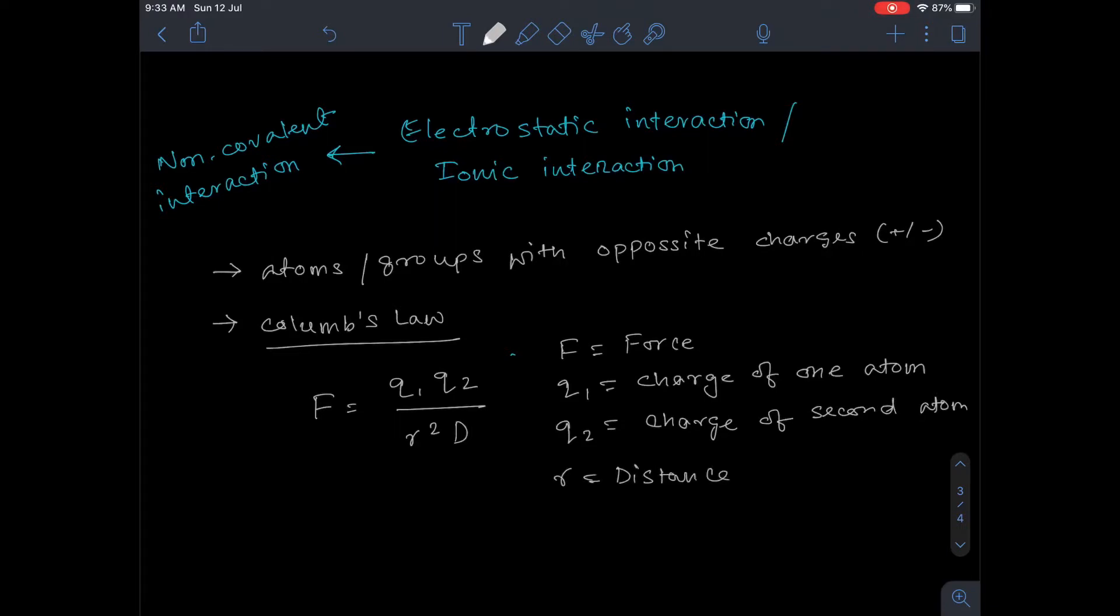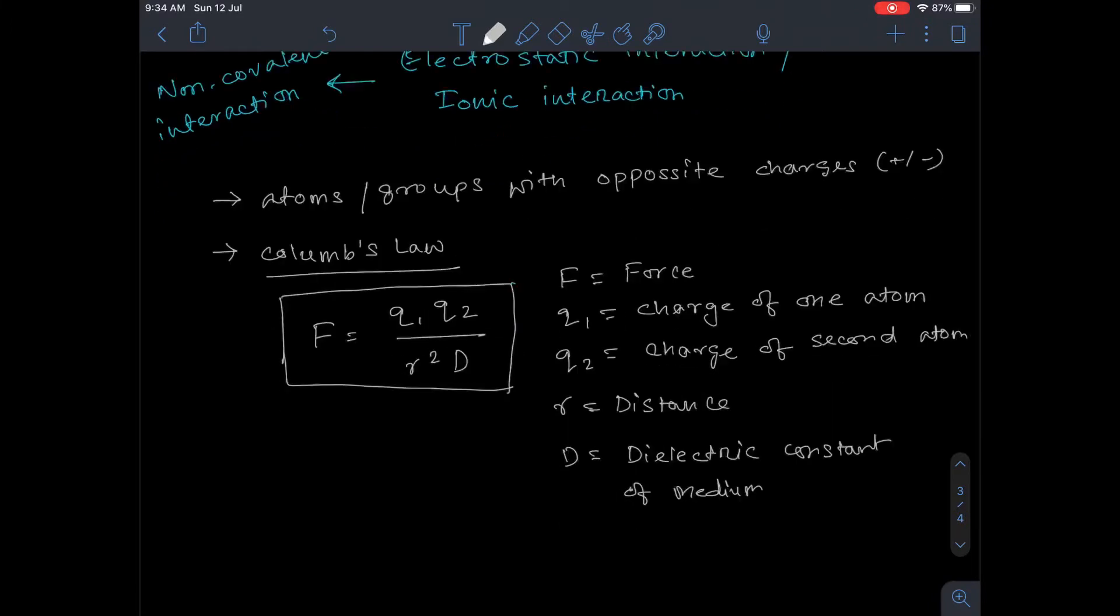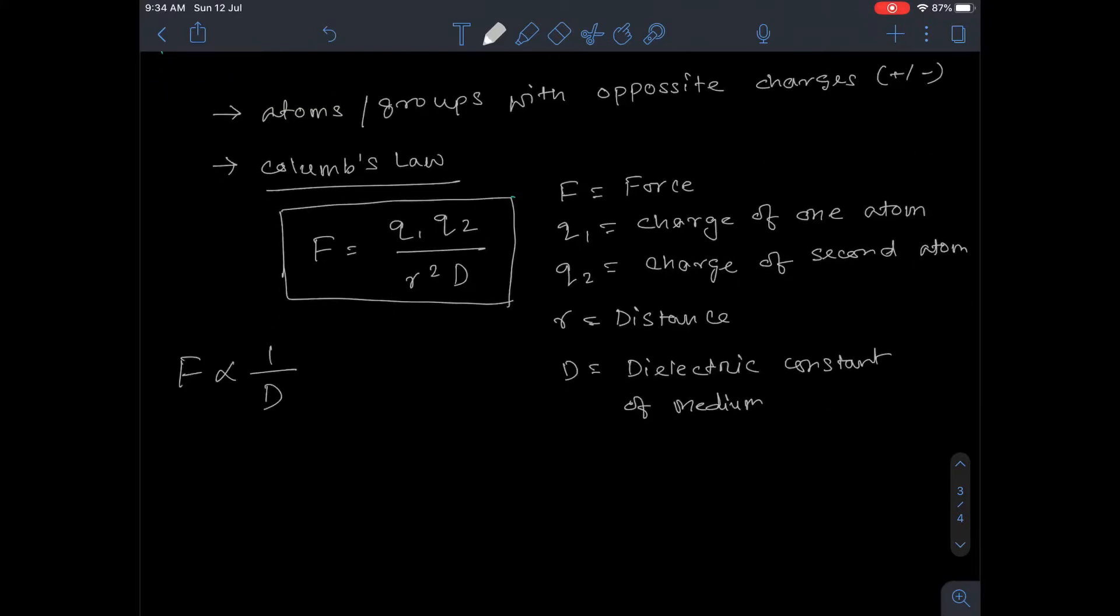From here we can derive that F is inversely proportional to d. In case of air or vacuum, d = 1, so force is highest. For benzene, which is non-polar, d = 4.6, so force is high. In case of H2O, which is polar, d = 80, so force is very low.